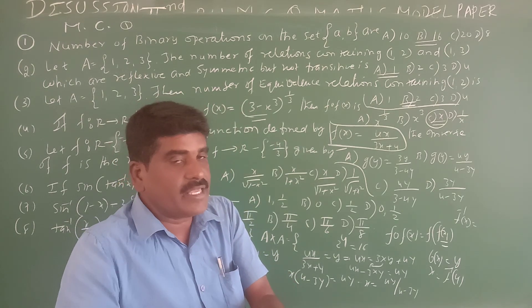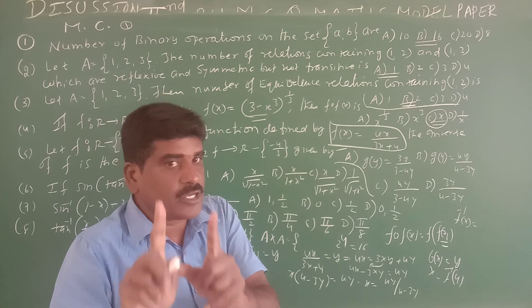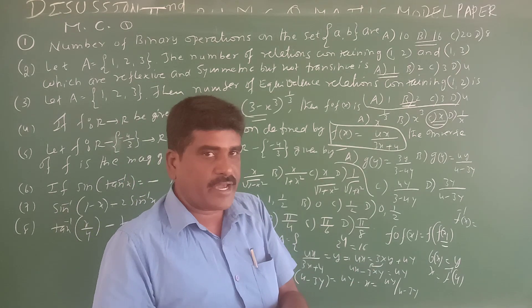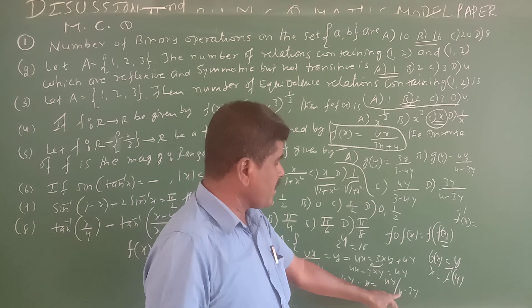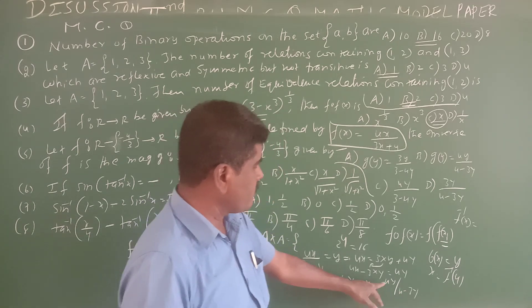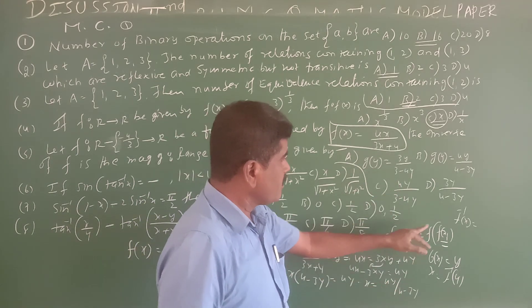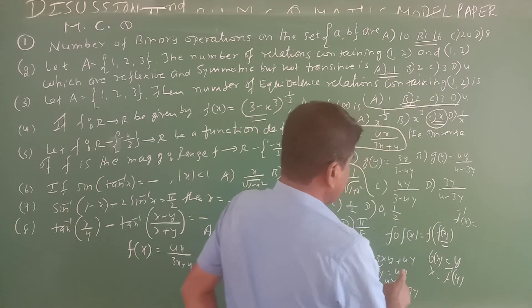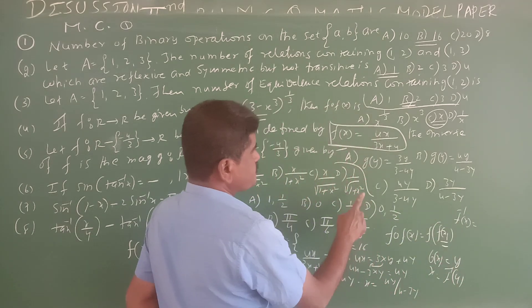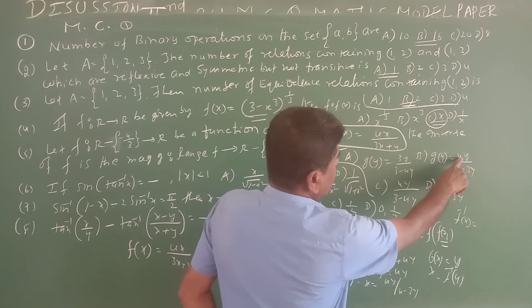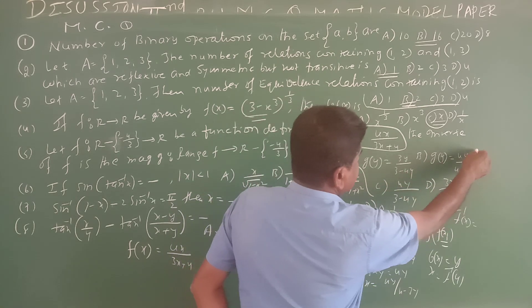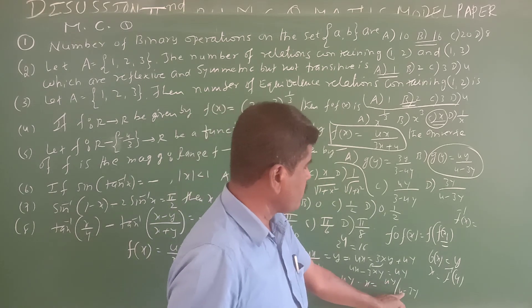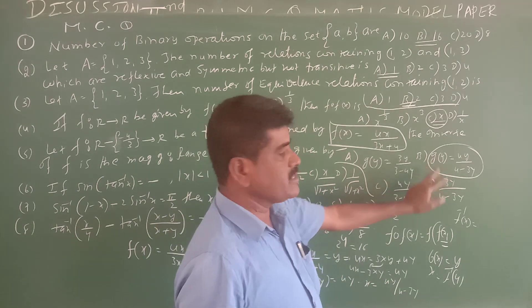So x = 4y/(4-3y), which is the inverse function G(y). This equals 4y divided by (4 minus 3y). Option B is the answer: g(y) = 4y/(4-3y).